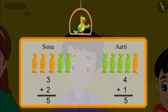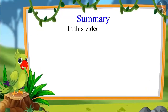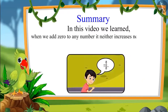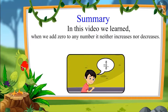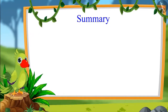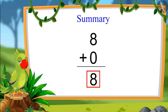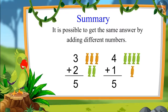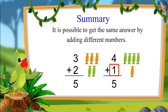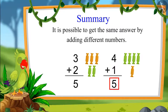This means Sonu and Aarti both got exactly the same number of toffees! So children, it is possible to get the same answer by adding different numbers. When we add zero to any number, it neither increases nor decreases — for example, adding zero to eight gives eight. We also saw that adding three and two gives five, and adding four and one also gives five.